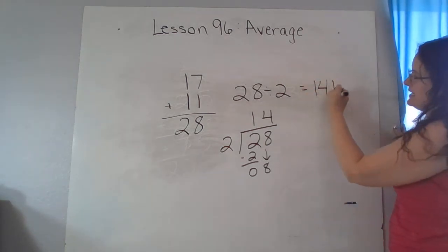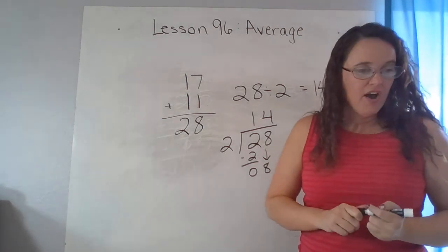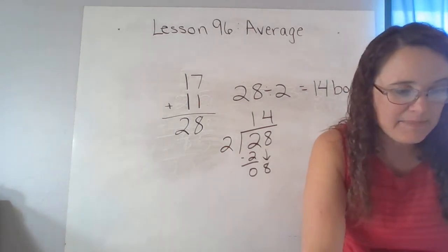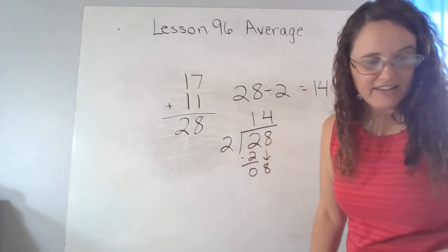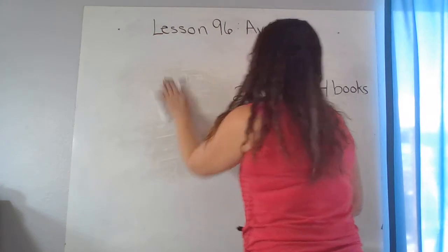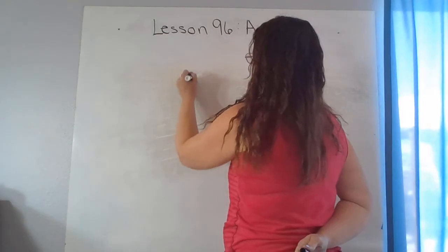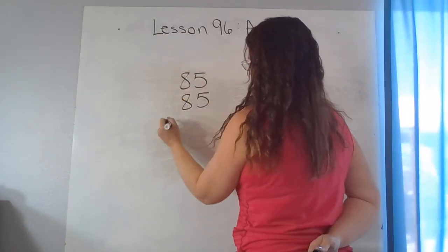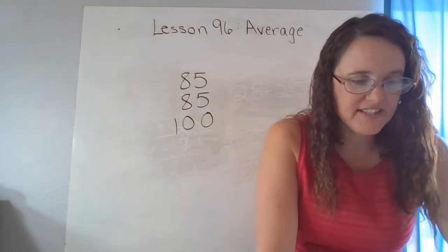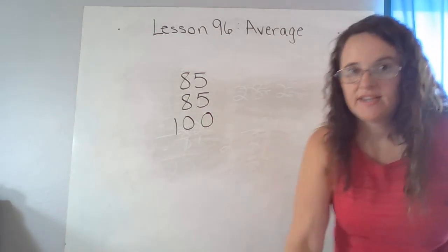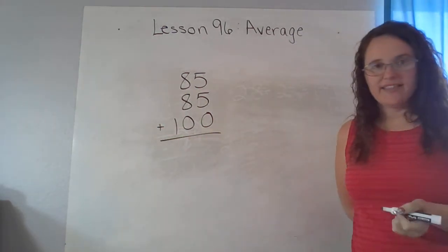So there would be 14 books in each stack. Okay, our final problem says Spencer's scores on his first three games were 85, 85, and 100. What was the average of his first three game scores? So here's his numbers. We have to add them up to start. Go ahead and try that now.